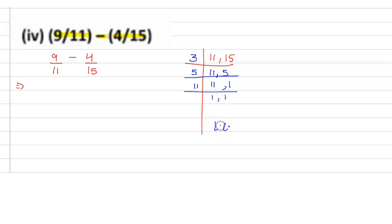So LCM will be the product of these factors which are 11, 5, and 3. So here we get 11 into 5 into 3, which is 165. So 165 is our LCM.